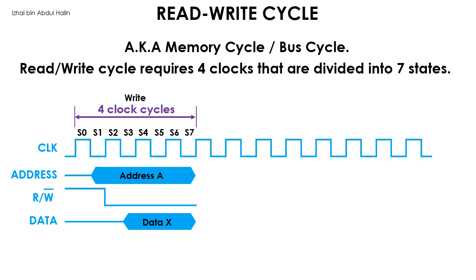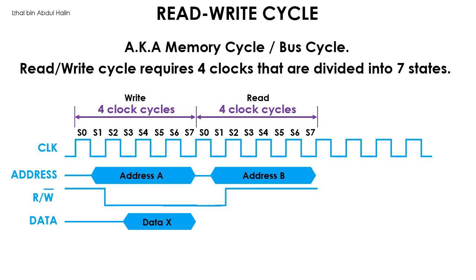Now let us examine a read cycle. This cycle is used to read data from memory. Let's start the read cycle here, exactly where the write cycle ended. The read cycle also uses four clock cycles that are divided into seven states. Similar to the write cycle, the address must be available at the beginning of state 1. We will call this address B. The read write signal is then asserted high for a read operation. It is set high at the beginning of state 2 and held high throughout the read cycle.